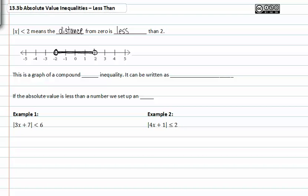This is a graph of a compound inequality. It can be written as x is greater than negative two and x is less than two. Notice that these two pieces only represent the line segment in between negative two and positive two. If the absolute value is less than a number, we set up an and.